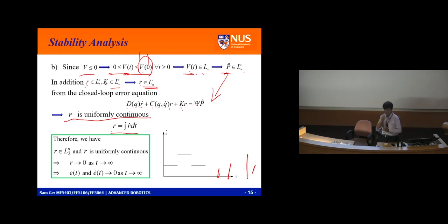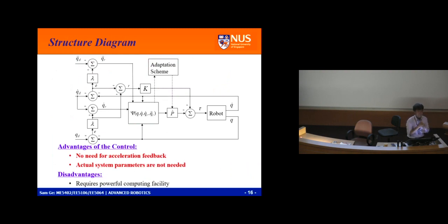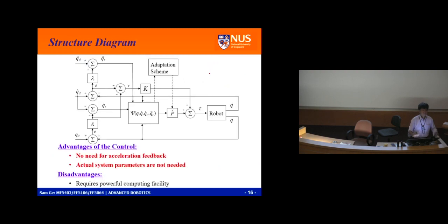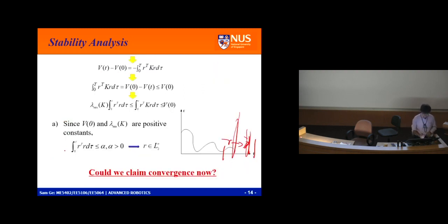We can conclude r goes to zero. This is the reasoning — I showed it and you follow it. r is in L2 and infinity norms, r-dot is bounded, r is uniformly continuous, therefore we eliminate the finite-pulse exception. r definitely converges to zero. The L2 definition: if the integral of r-square — or for matrix, r-transpose times r — is less than a constant, that is the definition of the L2 norm.